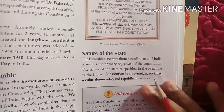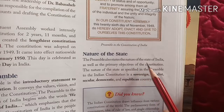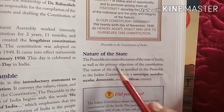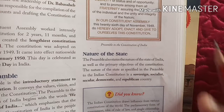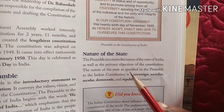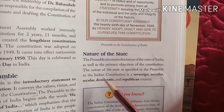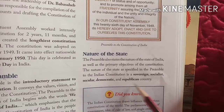The Preamble also states the nature of the state of India as well as the primary objectives of the Constitution. The nature of the state as specified in the Preamble to the Indian Constitution is that India is a sovereign, socialist, secular, democratic and republican country.